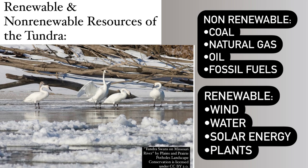Humans use coal to generate electric power, natural gas for heating, oil for electricity in vehicles, and fossil fuels to produce electricity. Humans also need water to survive. We use wind and solar energy for generating electricity, and plants are vital in the food chain and life — they can be eaten or feed an animal that a human would eat, and they produce oxygen for us to breathe.